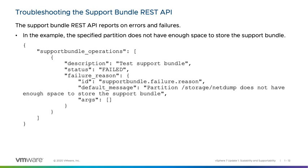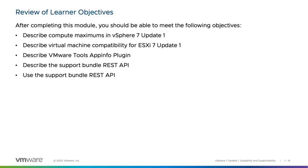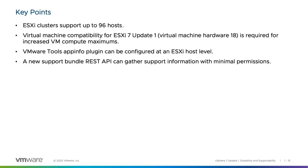At the end of this video, we have met the following learner objectives. We've described the compute maximums in vSphere 7 Update 1, described virtual machine compatibility for ESXi 7 Update 1, described the VMware Tools AppInfo plugin and how to disable it at an ESXi level, and described the support bundle REST API and how to utilize it. Key points: ESXi clusters can now support up to 96 hosts in a single cluster; virtual machine compatibility for ESXi 7 Update 1 is required for increased VM compute maximums; the VMware Tools AppInfo plugin can be configured at an ESXi host level; and a new support bundle REST API can gather support information with minimal permissions.